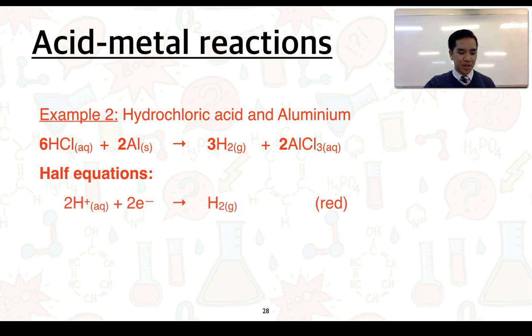The first one, same as previously, so 2H+ in solution, gaining two electrons to form hydrogen gas. That's the reduction half equation. The oxidation half equation being aluminium oxidising and forming aluminium ions, losing those three electrons.